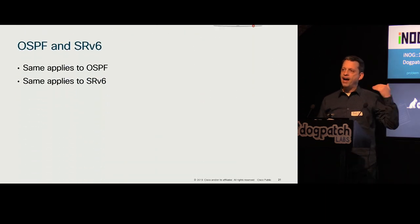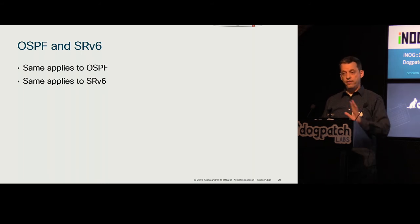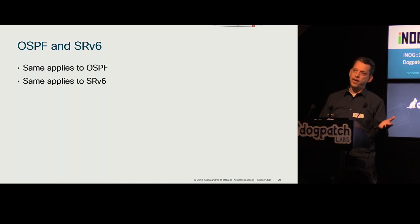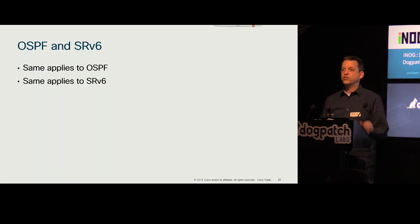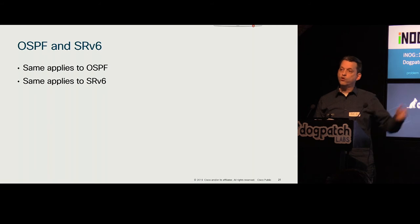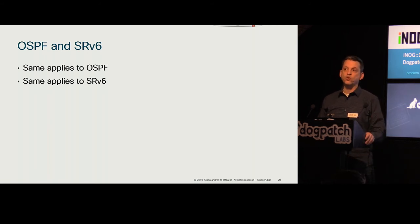Even though I may have used ISIS as the IGP in examples, this technology is IGP-agnostic — it applies to both OSPF and ISIS. What's even more interesting: it applies to the MPLS data plane for label cross-connects, and it also applies to SRv6 when doing IPv6-based source routing.